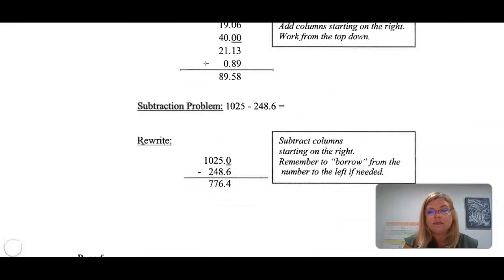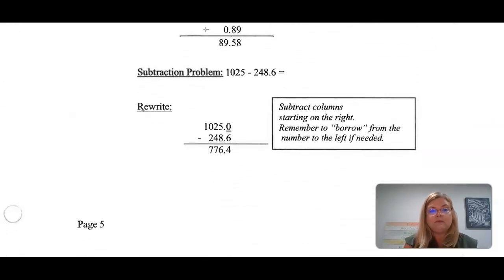It gives you another example of how you would make the subtraction columns and line that up. The problem is 1025 - 248.6. Very important, this is lined up in a nice column. We added a 0. There's not a 0 here, but we need that placeholder because we have 248.6. So we need that placeholder here to put the 0.